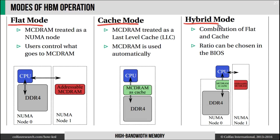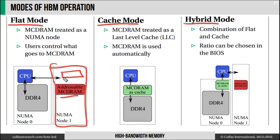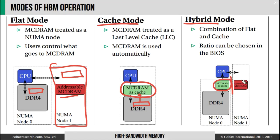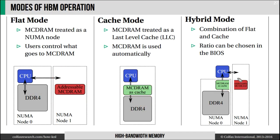In flat mode, the entire high bandwidth memory is exposed to the operating system as a NUMA node. It means that this memory is addressable and you get a special allocator with which you can put certain objects in high bandwidth memory and other objects in on-platform memory. In cache mode, you do not see MCDRAM in the operating system. Rather, it sits quietly between the CPU and the on-platform memory, and objects that you read from on-platform memory get cached in high bandwidth memory. In hybrid mode, you split your high bandwidth memory — one part is used as a cache and the other part remains addressable.